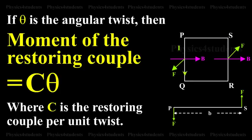If theta is the angular twist, then moment of the restoring couple equals C theta, where C is the restoring couple for unit twist.